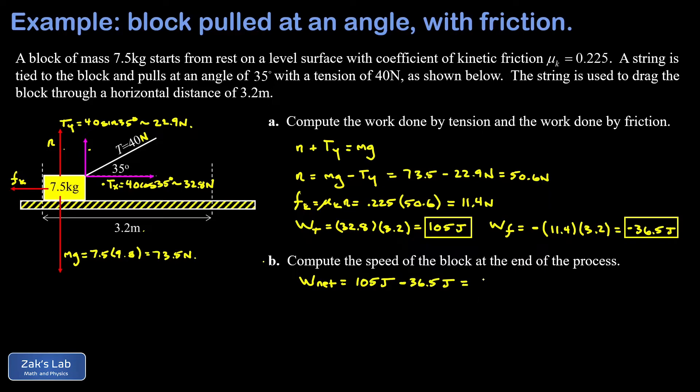The work energy theorem just says that the net work you do on something causes a change in its kinetic energy. So I'll write that as K final minus K initial. Well, the block started from rest so K initial is zero.